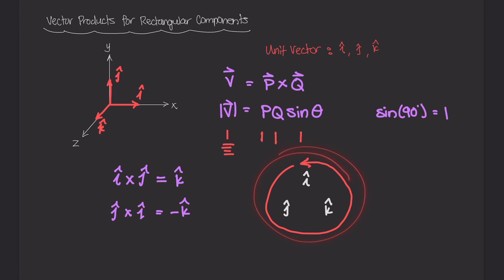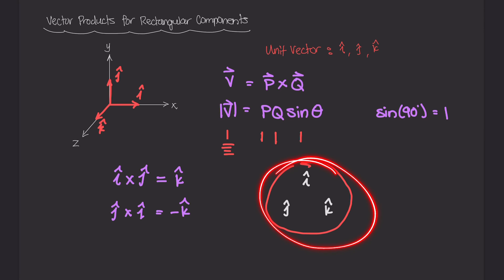This is going to be important when we actually start working with vectors in three-dimensional space. Every vector in 3D has three components along the x, y, and z axes, and we can use this diagram to figure out the direction of all the component cross products when we distribute them out.